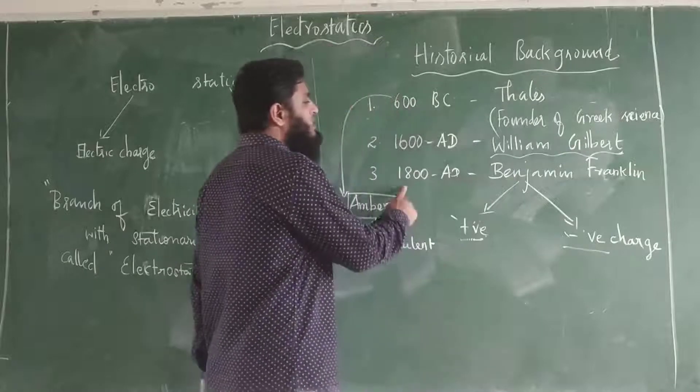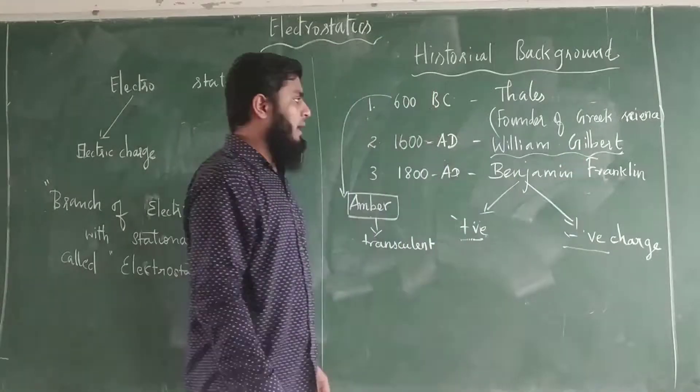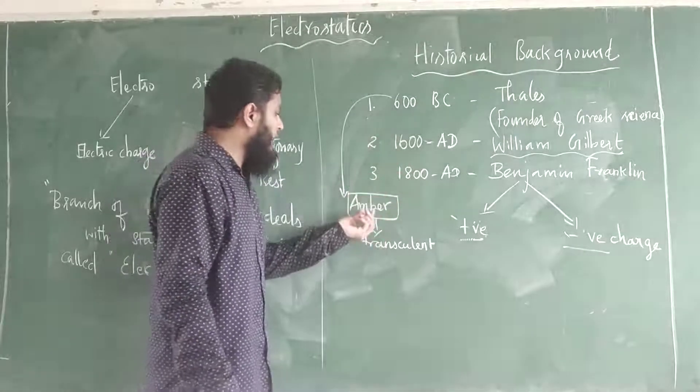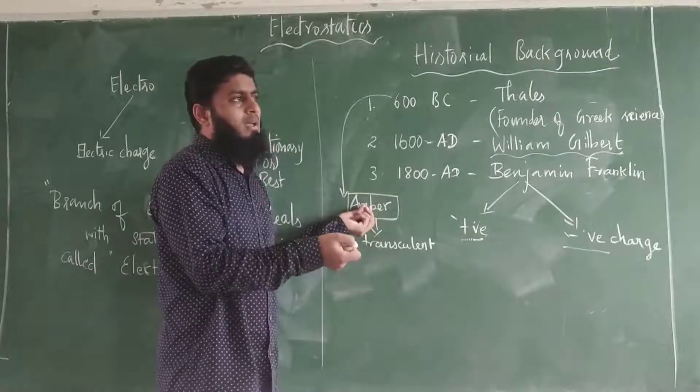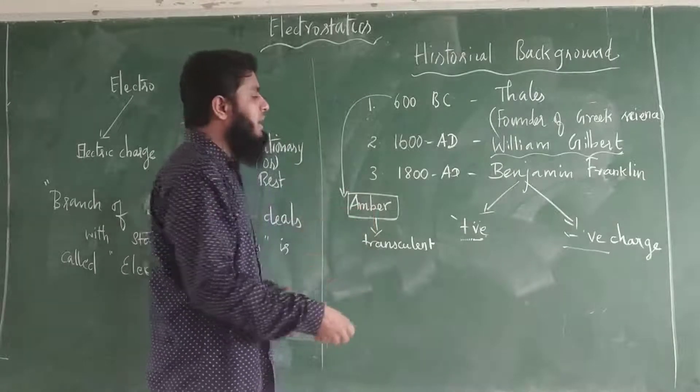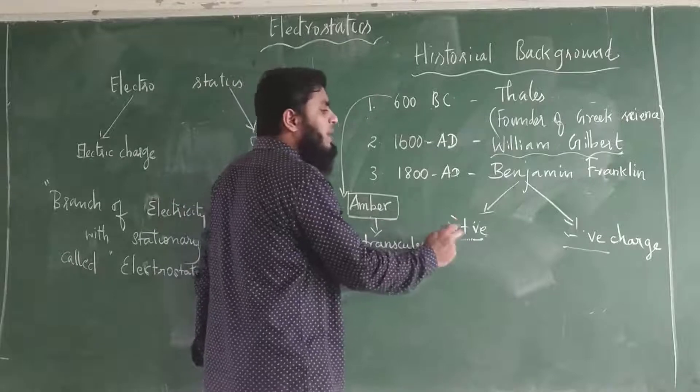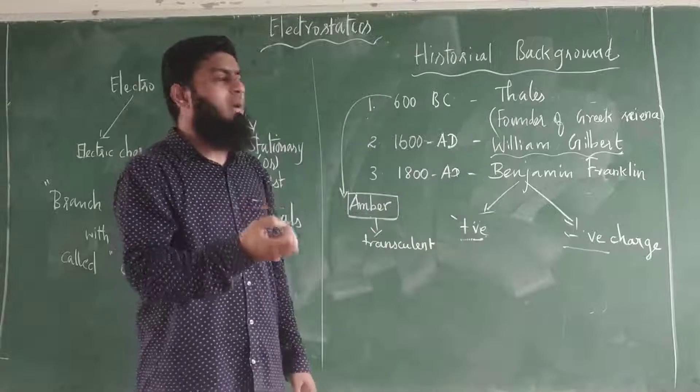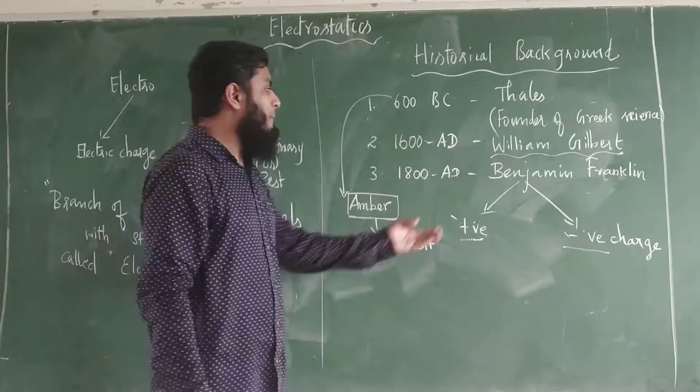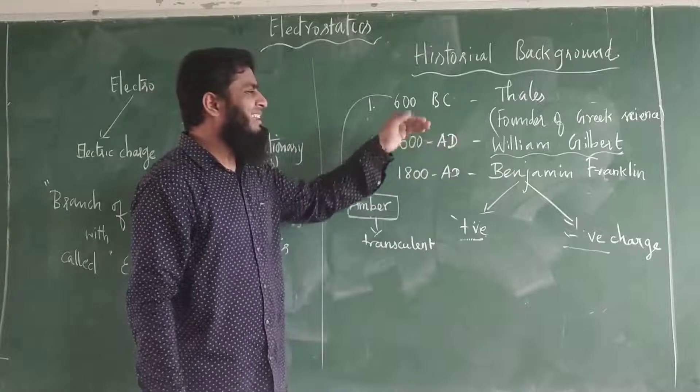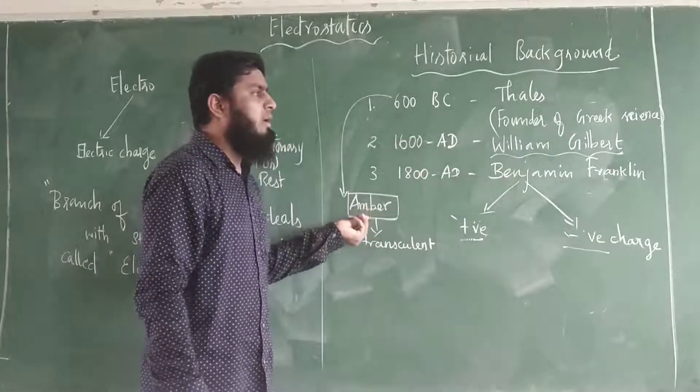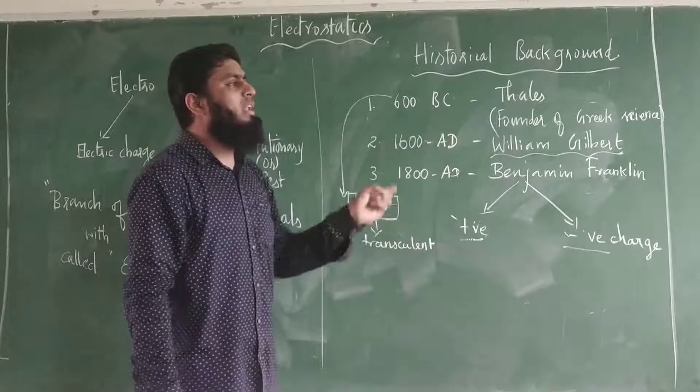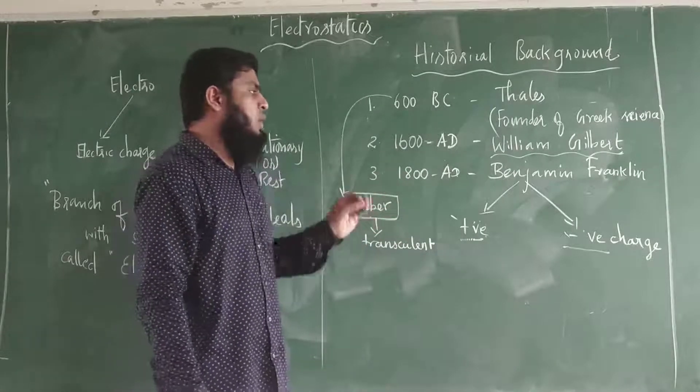In the 18th century, Benjamin Franklin, an American scientist, discovered that when materials are rubbed together, charge is transferred. He defined these as positive and negative charges. For example, when an amber rod is rubbed, it acquires a negative charge, while a glass rod rubbed with silk acquires a positive charge.